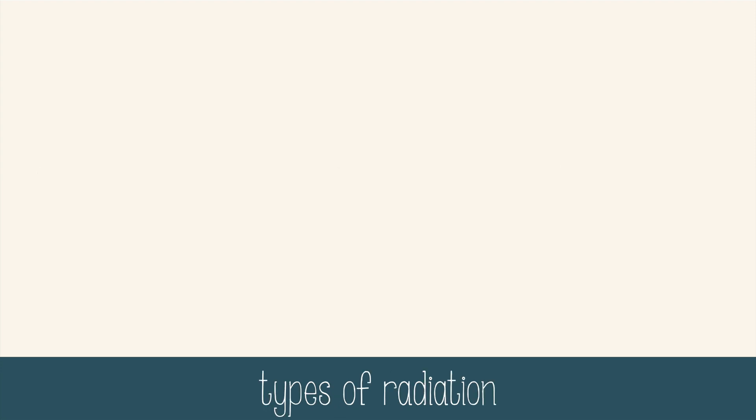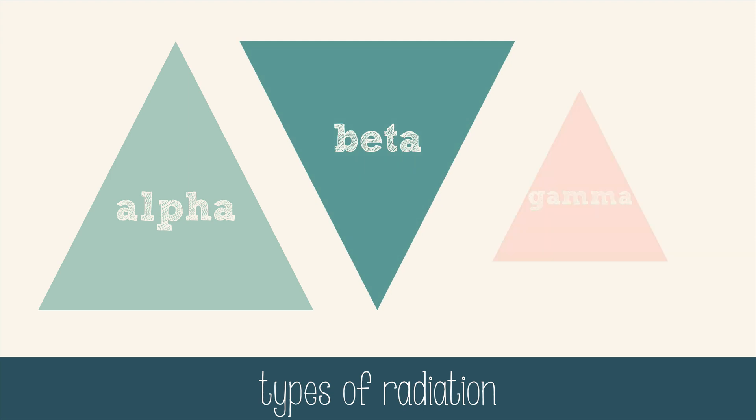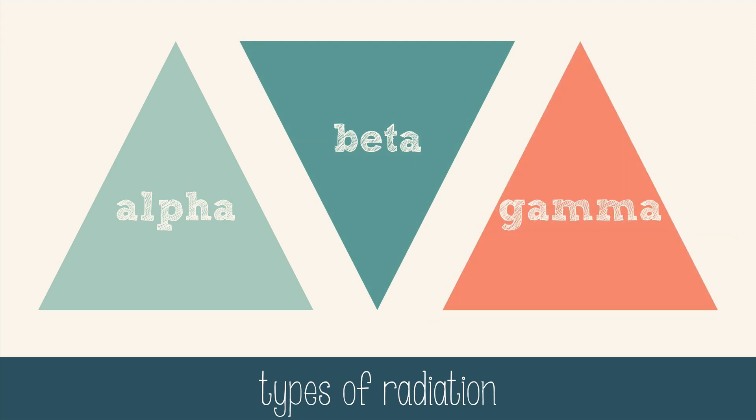There are three major types of radiation: alpha, beta, and gamma radiation. Alpha and beta are particles, and gamma radiation is made of rays.